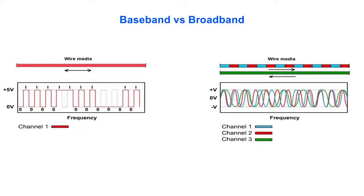Baseband is a transmission form in which digital signals are sent through direct current pulses through a wire medium. This system can transmit only one signal or only one channel. Baseband transmission has bidirectional data flow. It can send and receive data on the same wire medium.